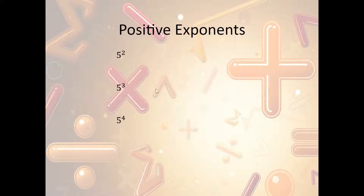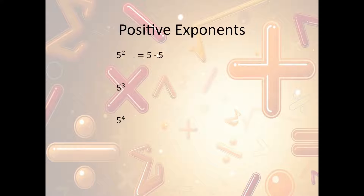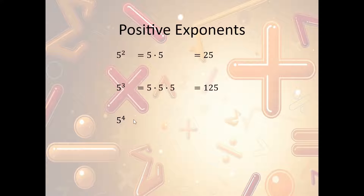Now let's talk about positive exponents. Positive exponents mean that the number of times we're going to multiply the base by itself is a positive number. So we have 5 squared — that means we're multiplying 5 times 5, which is 25. Then we have 5 to the third power, which is 5 times 5 times 5, which is 125. And then 5 to the fourth power is 5 times 5 times 5 times 5, which is 625. We can do this with any exponent — take any base number, raise it to an exponent, multiply it by itself that many times, and solve.